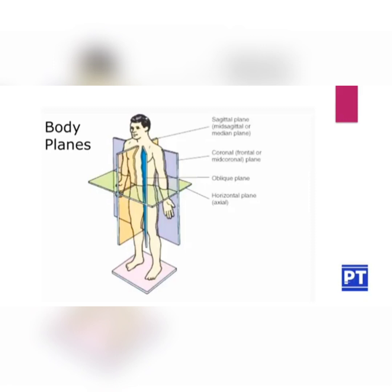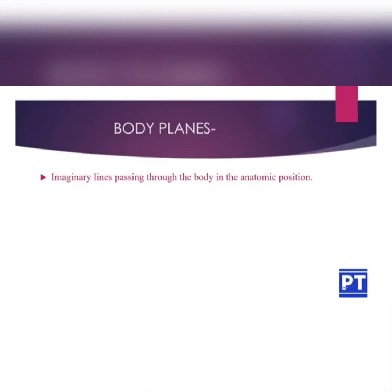Now moving on to the body planes — how the human body is divided. The body can be divided by a sagittal plane, midsagittal or median plane, coronal or frontal or midcoronal plane, oblique plane, and the horizontal or axial plane. Body planes are imaginary lines passing through the body in the anatomic position.